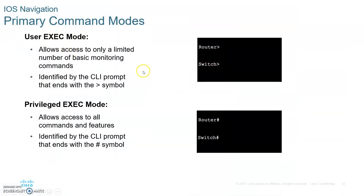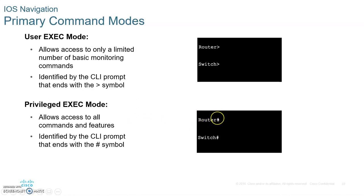Once you're in, there are two modes. You are in User Mode if you see the prompt with the greater-than sign. If you type the command 'enable,' you go into Privileged Mode. In Privileged Mode, the prompt shows the device name followed by a pound sign. Privileged Mode is where you make changes to the router. In User Mode, you can only execute basic commands. Write down these two primary modes and what they allow you to do.